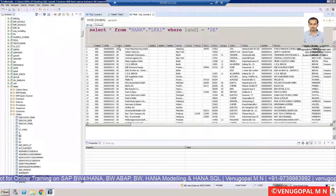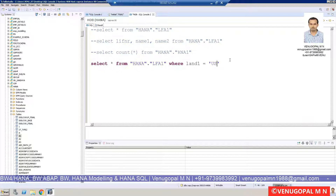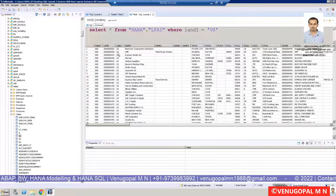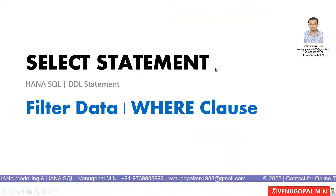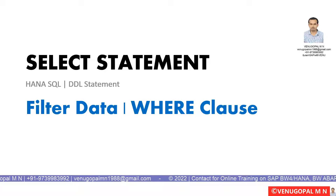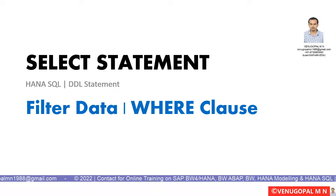Running that, we can see only those records which belong to DE (Germany). If you want to change this to US, all you have to do is set LAND1 = 'US' and run it. Hopefully, from this session you got to know the basic use of the SELECT statement. There are different clauses which can be associated with SELECT, such as HAVING, GROUP BY, and ORDER BY — we will cover those in future separate videos.